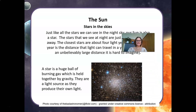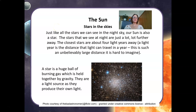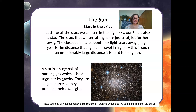Just like all the stars we can see in the night sky, our Sun is also a star. The stars that we see at night are just a lot, lot further away. The closest stars are about 4 light years away. A light year is the distance that light can travel in a year — an unbelievably large distance. A star is a huge ball of burning gas which is held together by gravity. Stars are a light source as they produce their own light. There's nothing better than lying down on the grass and staring up at our beautiful night sky in South Africa, away from city lights.